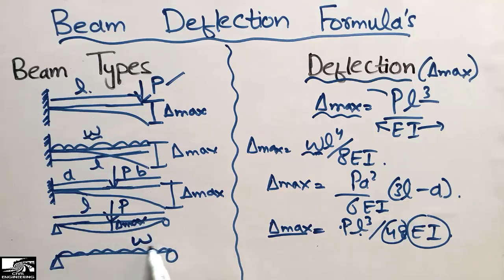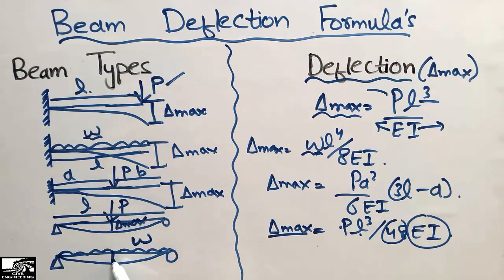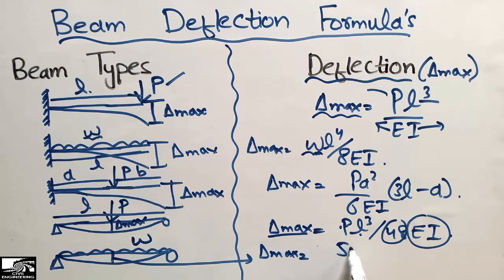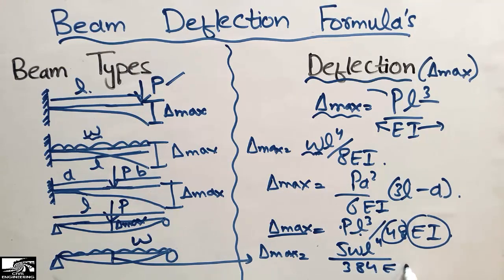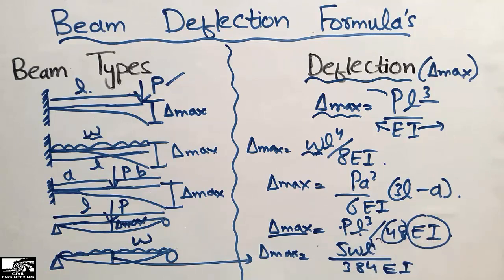The last beam type is a simply supported beam with a uniformly distributed load represented by W. It also shows maximum deflection at the center of the beam. This maximum deflection can be found using the formula 5WL⁴ divided by 384EI, where L is raised to the power of 4. This formula is used to find the deflection at the center of this type of beam.